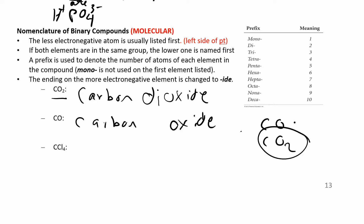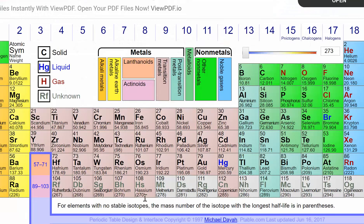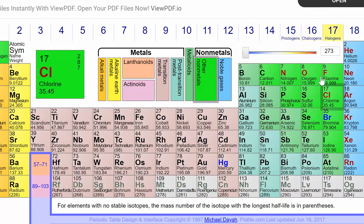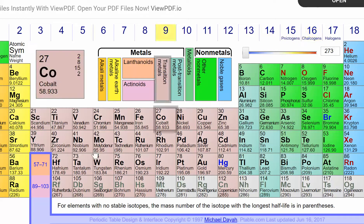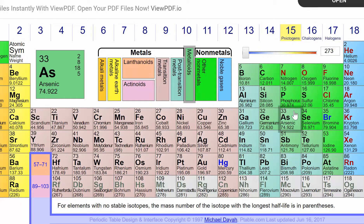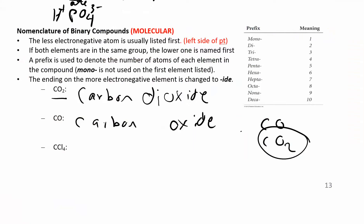Use CO2 as your example when figuring out whether something is ionic or molecular. Carbon dioxide is your model for a molecular compound. If you have two nonmetals, you have a molecular compound. If you have something like sodium chloride — a metal and a nonmetal — then you have an ionic compound.